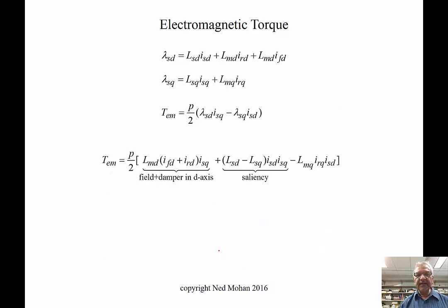This is the electromagnetic torque that we can derive from equations we've seen before. You can see there is a saliency term here because the salient pole machine's D-axis and Q-axis do not have the same inductances. LSD is not the same as LSQ, so we get one term corresponding to the saliency.